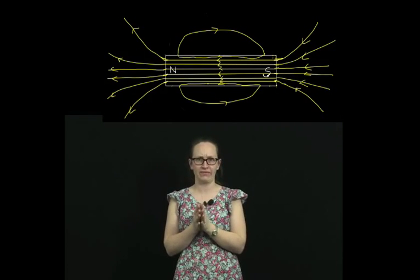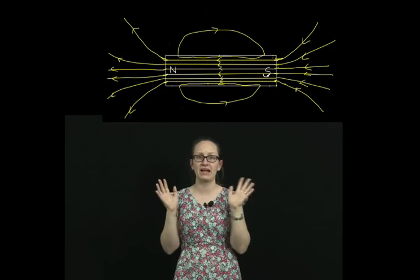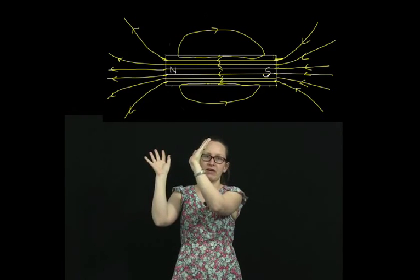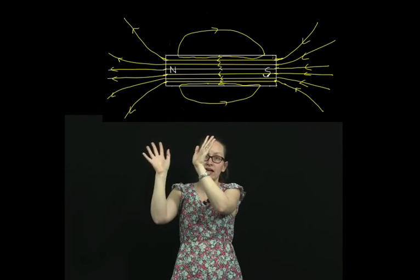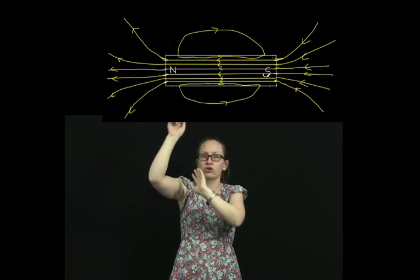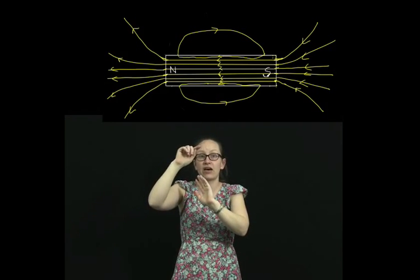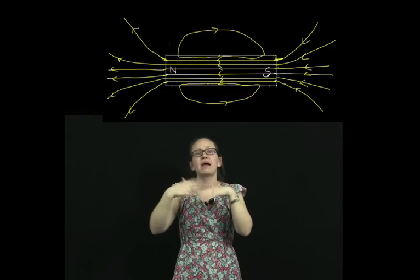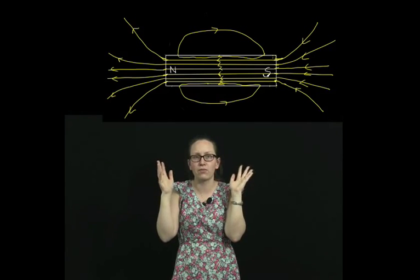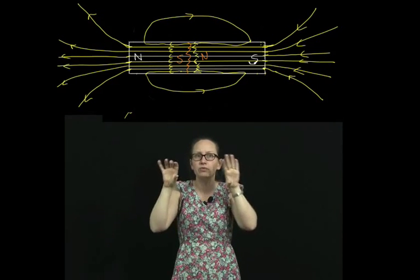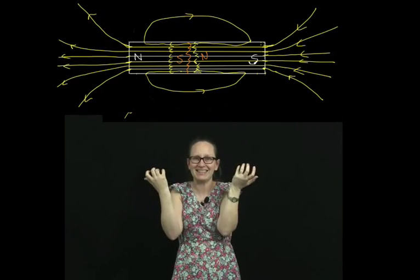Now a useful way to visualize magnetic fields is by drawing magnetic field lines. We can draw magnetic field lines around a bar magnet like in this diagram up here. Notice that the magnetic field lines are drawn coming out of the north pole and into the south pole. The magnetic field lines continue through the center of the bar magnet. This is why if we snap the bar magnet in half, we end up with a new set of two poles.